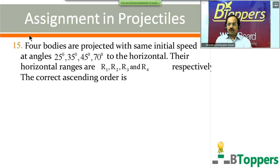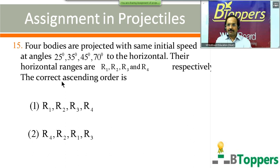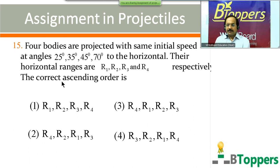Question number 15: four bodies are projected with the same initial speed at angles 25 degrees, 35 degrees, 45 degrees, and 70 degrees to the horizontal. Their horizontal ranges are R1, R2, R3, and R4 respectively. The correct ascending order is — four options shown on screen. Come on, try the question.